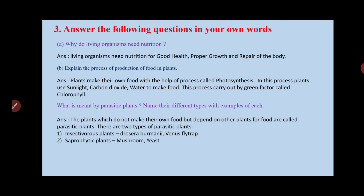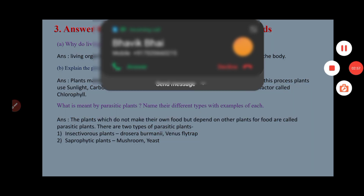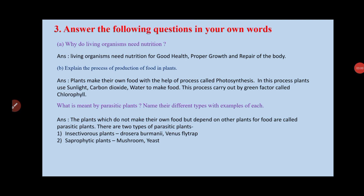The second sub-question is: explain the process of production of food in plants. The process of making food in plants is called photosynthesis. In this process, plants use sunlight, carbon dioxide, and water to make food. This process is carried out by the organelle called chlorophyll, which is green in color.